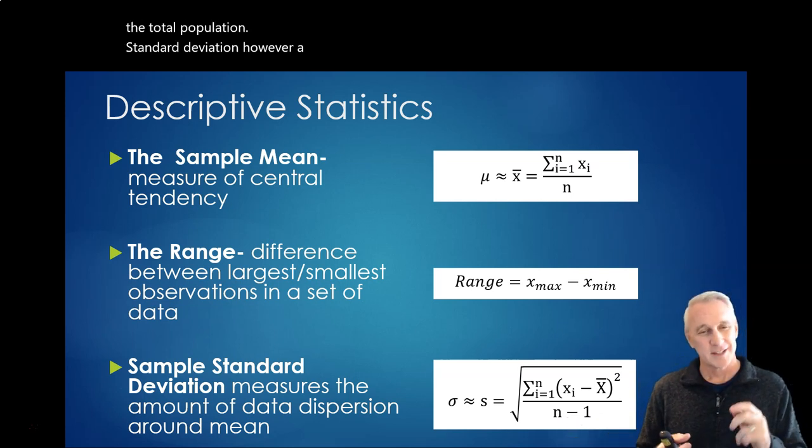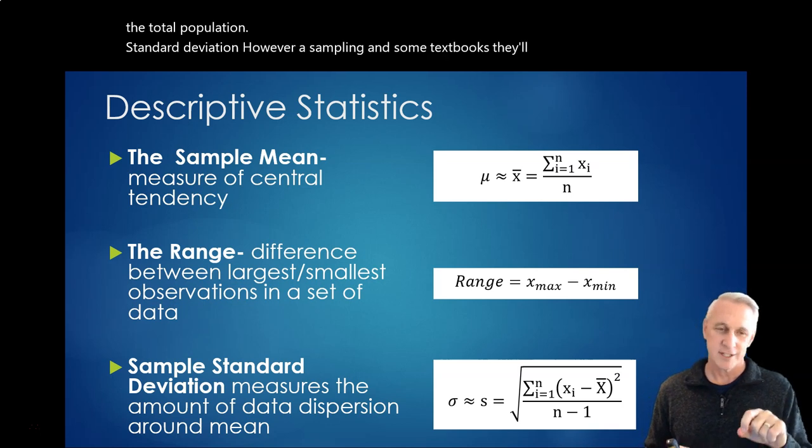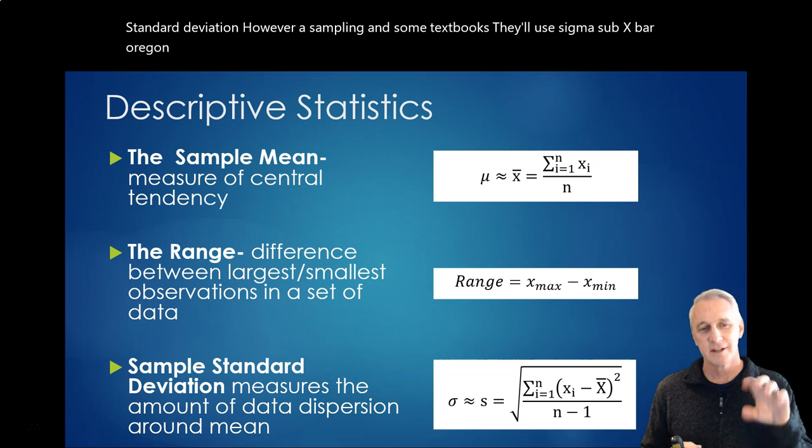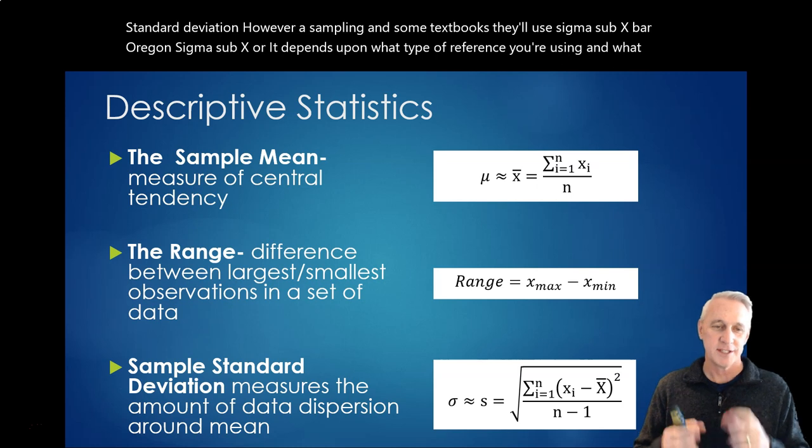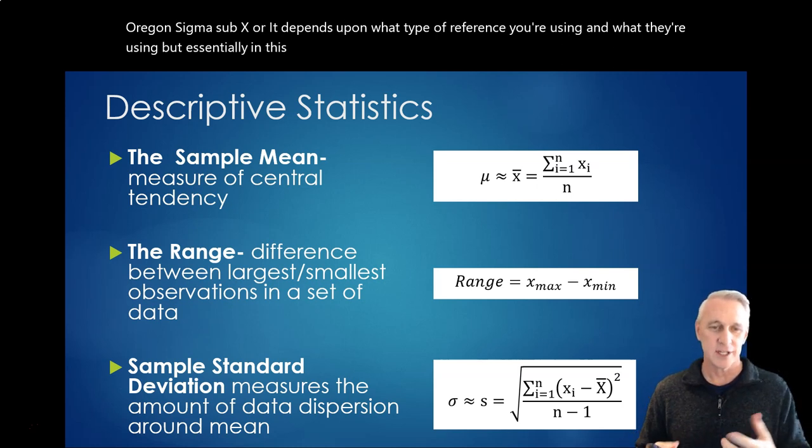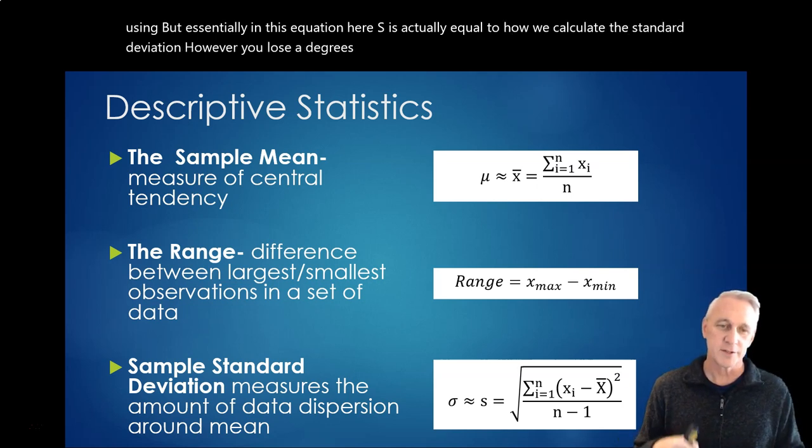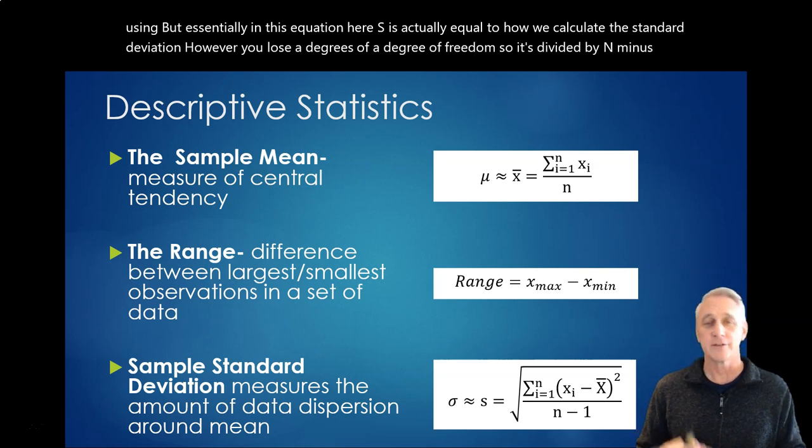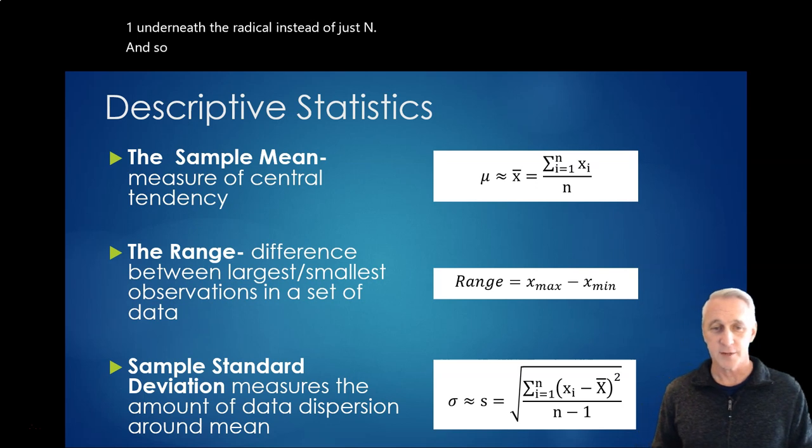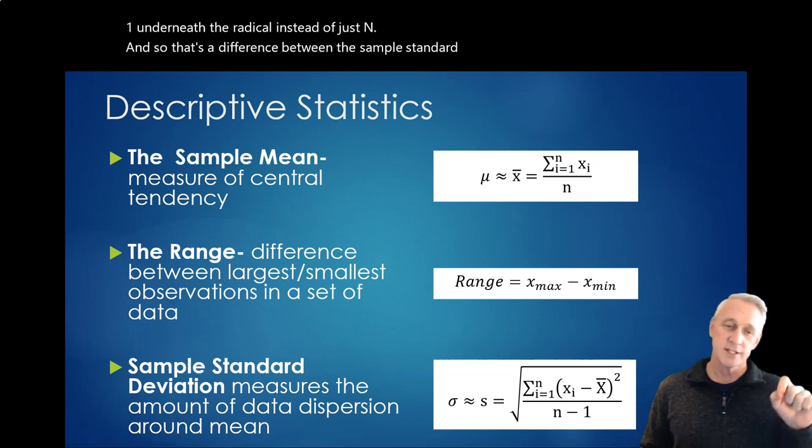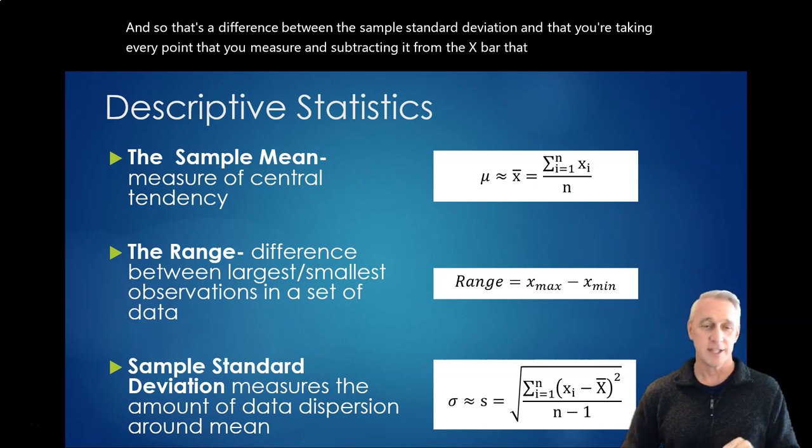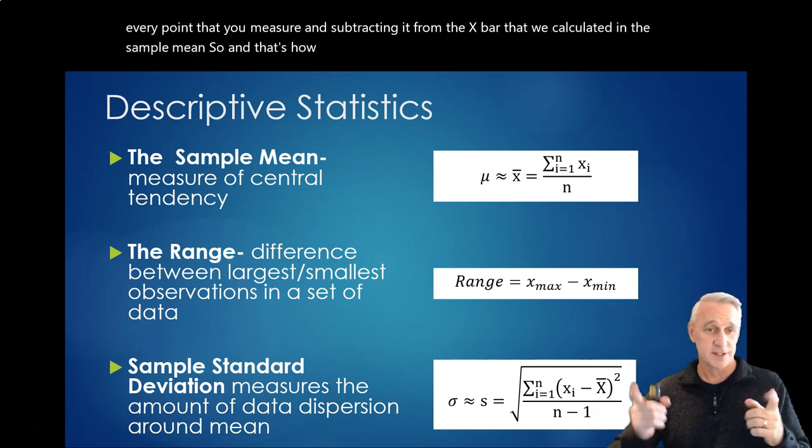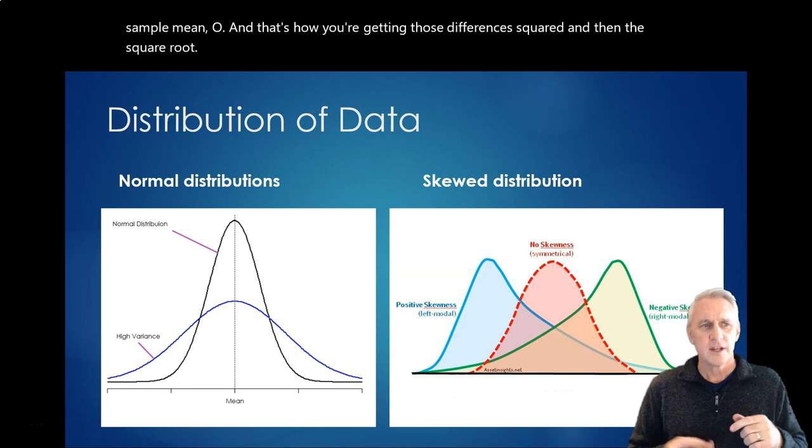The other thing that's related to sampling is a sample standard deviation, which is different than the population total standard deviation. So typically sigma represents, by itself, the total population standard deviation. However, a sampling, and some textbooks, they'll use sigma sub x-bar or sigma sub x or s. It depends upon what type of reference you're using and what they're using. But essentially, in this equation here, s is actually equal to how we calculate the standard deviation. However, you lose a degree of freedom, so it's divided by n minus 1 underneath the radical instead of just n. And so that's a difference between the sample standard deviation. And you're taking every point that you measure and subtracting it from the x-bar that we calculated in the sample mean.